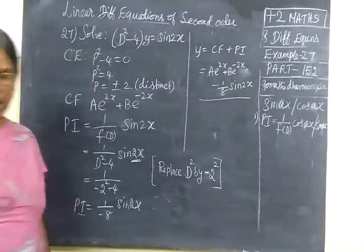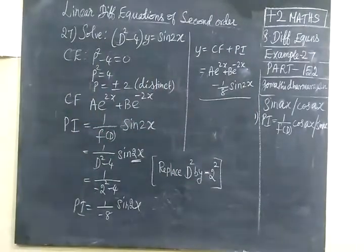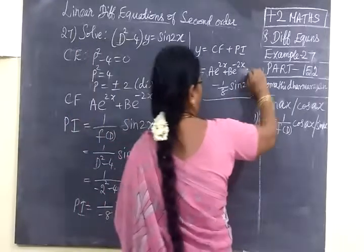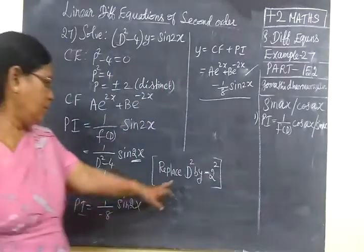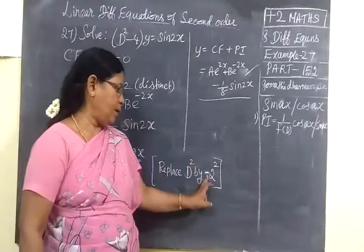So now we will see the answer: A e power 2x plus B e power minus 2x minus 1 by 8 sin 2x. This is simple. You are replacing D square by minus 2 square.